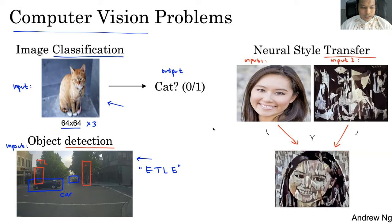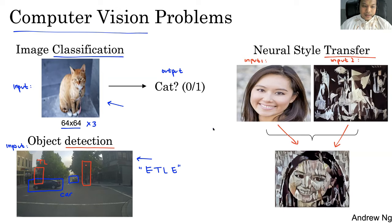Codingan dan implementasinya kita akan bahas pekan depan. Jadi pekan ini kita akan bahas bagaimana teknikalnya. Karena kalian orang IT belajar AI, harus tahu teknikalnya — apa building blocks dari convolutional network CNN, apa saja parameter yang ada di sana, sehingga nanti kalau kalian mau improve performance, bisa tahu di mana improve-nya dan parameter apa yang harus di-tuning.